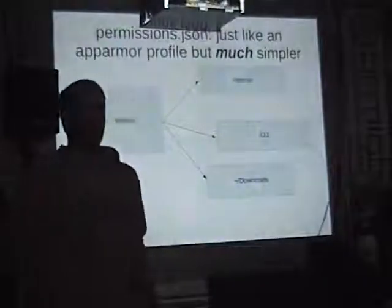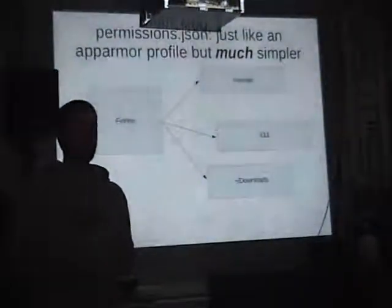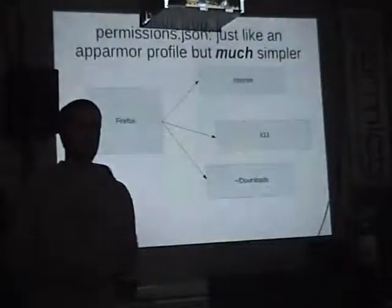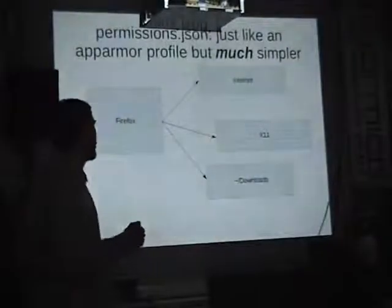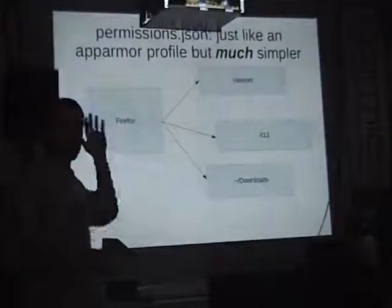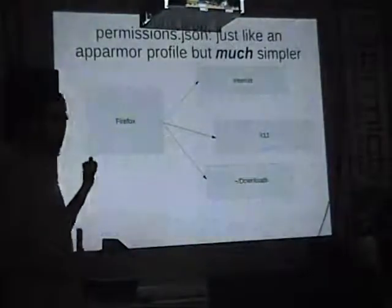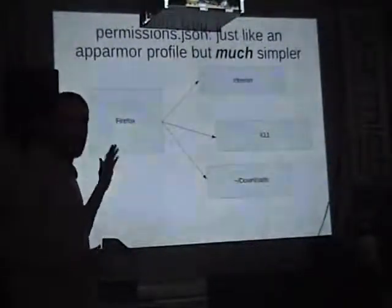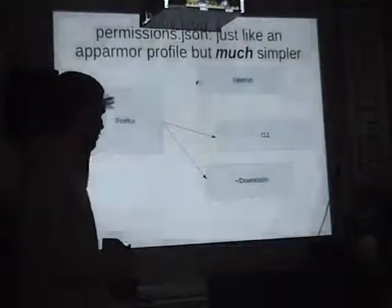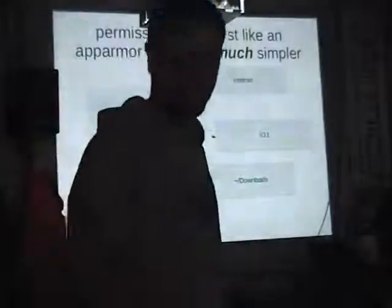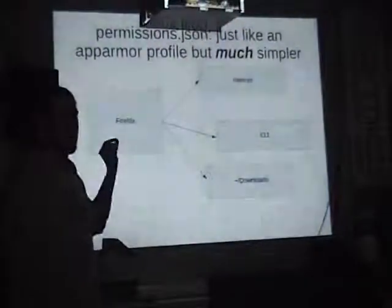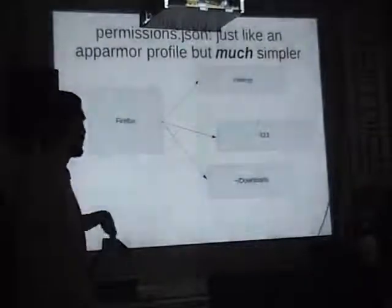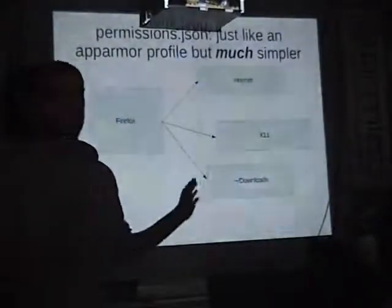You may have heard of AppArmor — it's a really similar concept. You have a profile and you give each program a list of things it's allowed to access. With sub-user, we also have a permissions list for each program, and that permissions list is a lot simpler than AppArmor's. Firefox has a very simple list: it can access the internet, it can access X11, it can display windows, and it can access your downloads directory. Everything else is just magically contained.